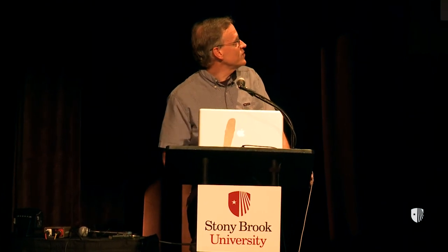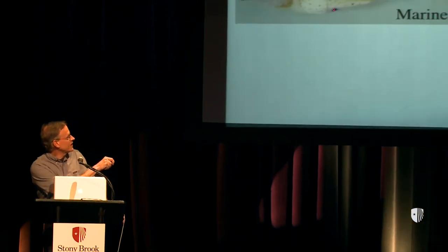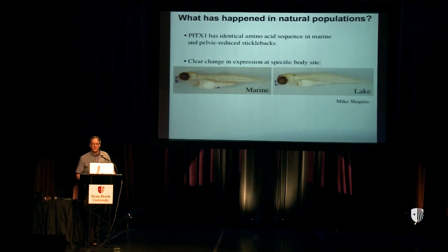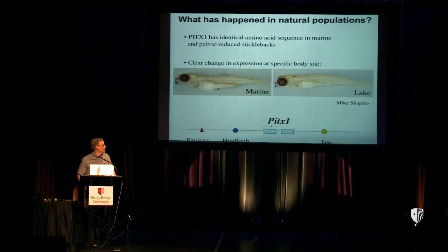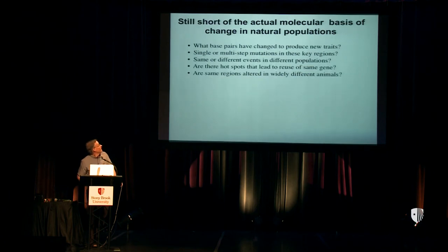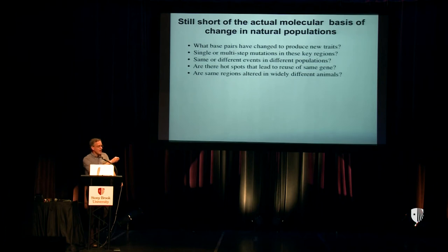The mouse knockout of the PITX1 gene has short hind limbs, but it is also missing its jaw, has cleft palate, and dies at birth with craniofacial defects. So that raised the obvious question: what's actually happened in natural populations? In the PITX1 gene, if you compare its sequence in marine and freshwater fish, there are no changes in the coding region. But in lake populations, you lose the expression at one particular place in the body — the pelvis — while expression in the head is preserved. Unlike the mouse labs who knocked out the coding region and created mice with simultaneous defects in everything that gene normally did, nature has preserved the coding region and just lost the information for expression in one particular place in the body.